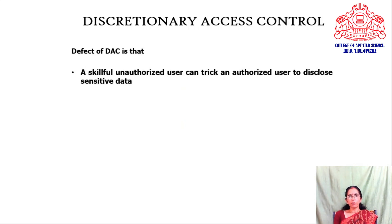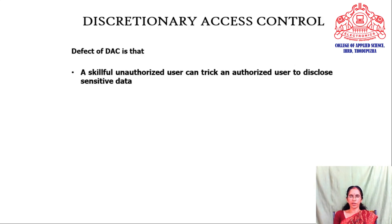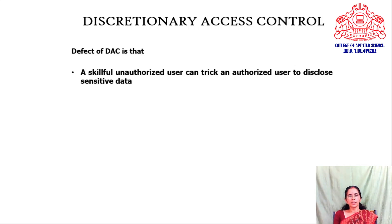Even when implementing a discretionary access control security policy, there are certain defects. A skillful unauthorized user can trick an authorized user into disclosing sensitive data. For example, an unauthorized user like Job who wants data from a grade table may access permissions from an authorized user and, by exploiting certain code of the DBMS, extract all tuples from the grade relation — meaning DAC alone cannot fully prevent data breaches by skillful unauthorized users.